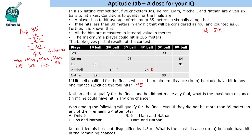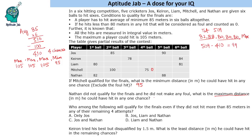Since Nathan made no foul, his minimum throw is 80. Two values are already given as 80 and 88. For the remaining three chances, we consider the minimum value of 80 each: 80 × 3 = 240, plus 170 already given = 410. His total must be 509, so his maximum hit is 509 − 410 = 99 meters.